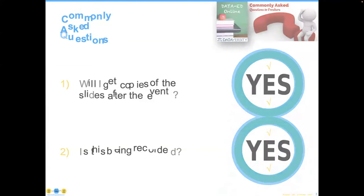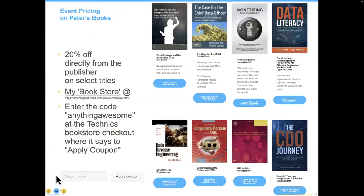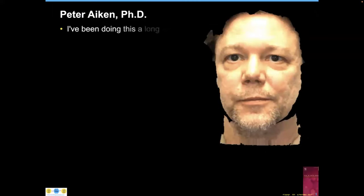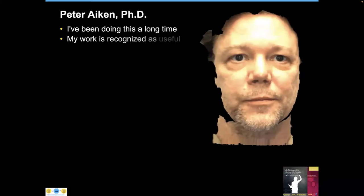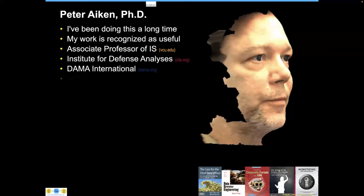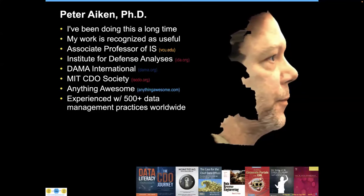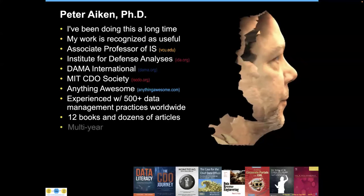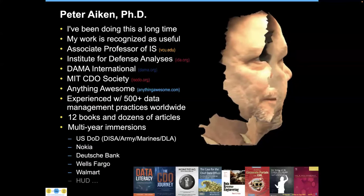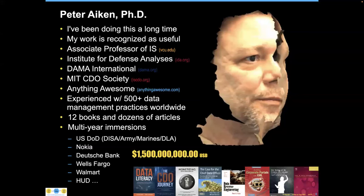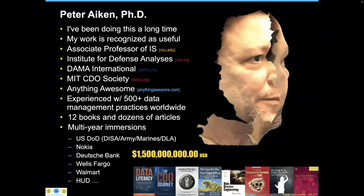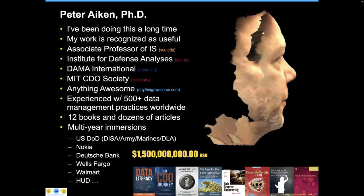Let me introduce our speaker for today, Dr. Peter Akin. Peter is an acknowledged data management authority and associate professor at Virginia Commonwealth University, president of DEMA International, and associate director of the MIT International Society of Chief Data Officers. For more than 35 years, Peter has learned from working with hundreds of data management practices in 30 countries. Among his 12 books are many firsts, starting before Google, before data was big, and before data science. Peter has founded several organizations that have helped more than 200 organizations leverage data, with specific savings measured at more than 1.5 billion US dollars.